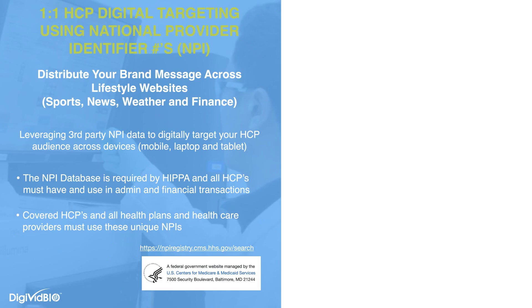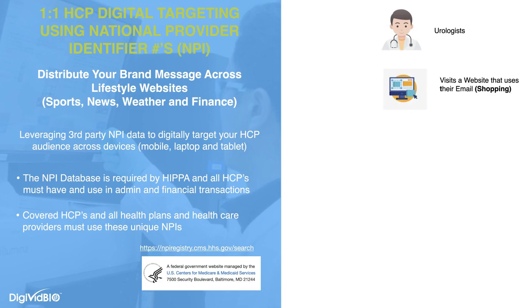It's actually a free database — you can check it here and anybody has access to it. But here's the real power: take, for example, a urologist that you're targeting. Once they go online and visit a website using their email address — think of a logged-in shopping experience — we know they're logged in, we know they're online, and we can start tracking those unique HCPs online.